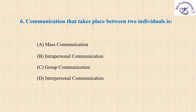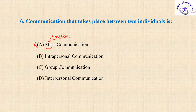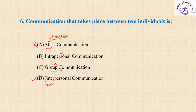Next question: communication that takes place between two individuals is what? Mass communication can be directly cancelled because mass means massive — when you are delivering a lecture to thousands of people, that is mass communication. Intrapersonal — intra means within — so that cannot be right. Group communication can be cancelled. Inter means between, so interpersonal — option D — is the correct answer.